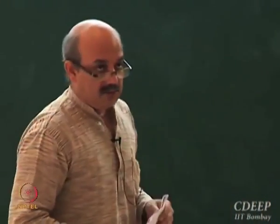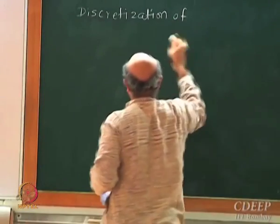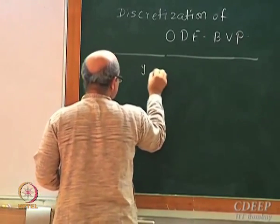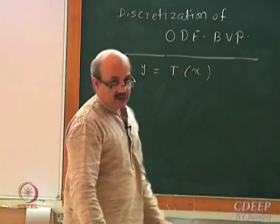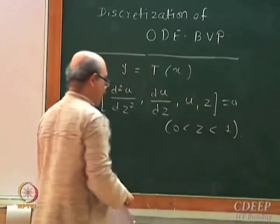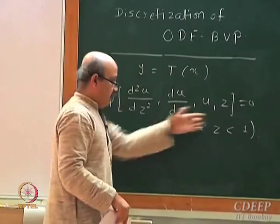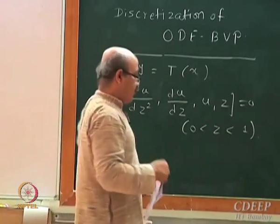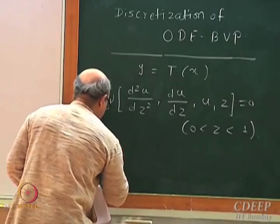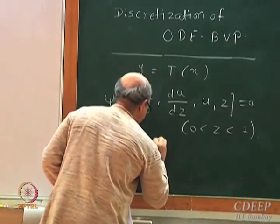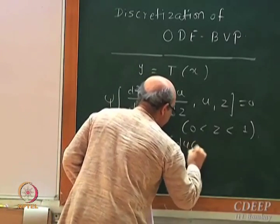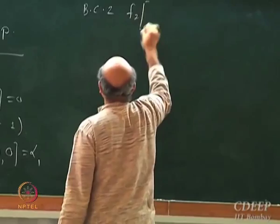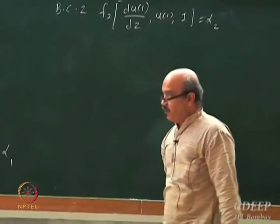I wrote a generic boundary value problem. The original problem is y equals t of x, which is a differential equation holding over the entire domain 0 to 1. Then we have two boundary conditions: boundary condition 1 is f1 and boundary condition 2 is f2.